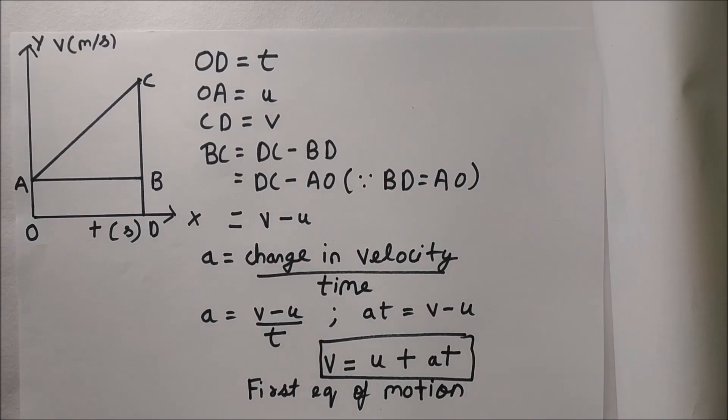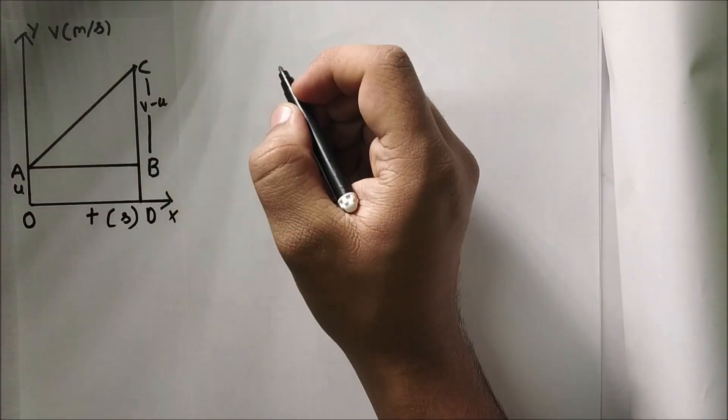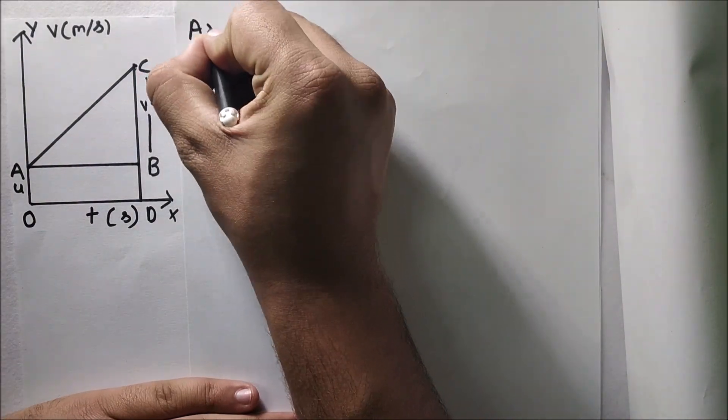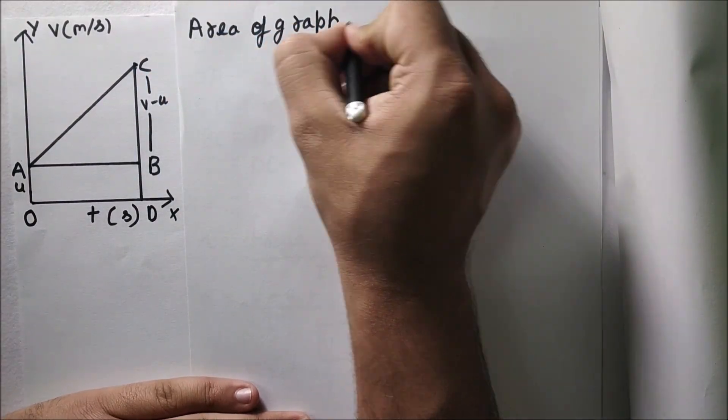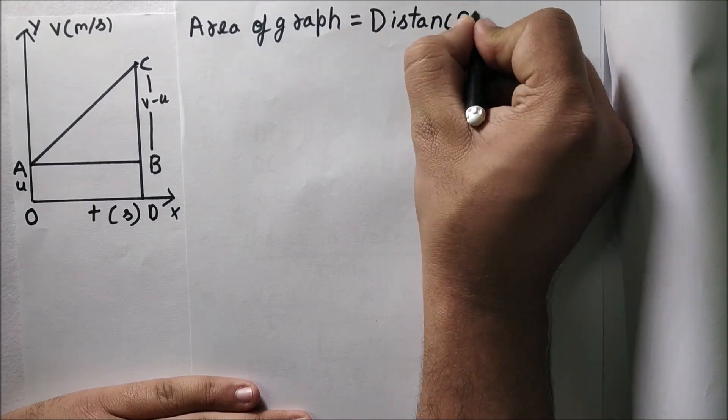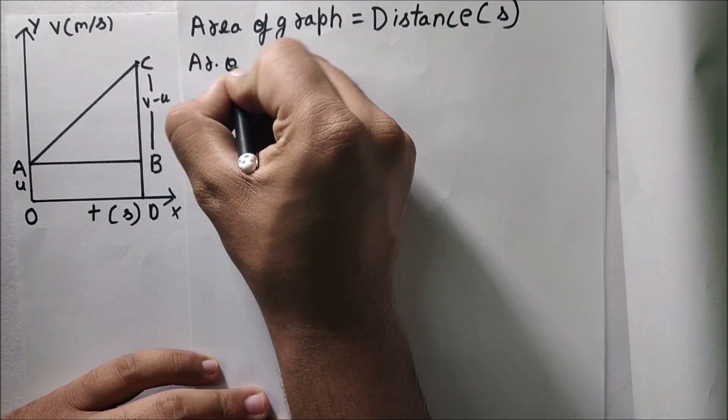Now let us start deriving the second equation of motion. The area of graph gives us the distance. How much area that the graph covers gives us the distance.